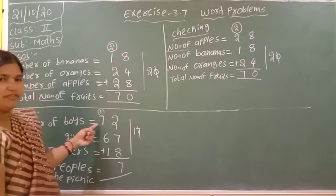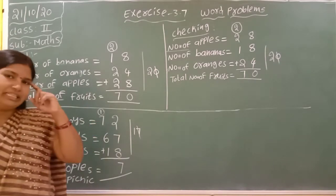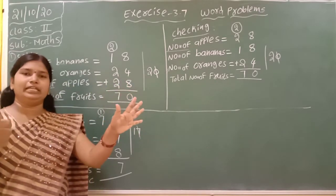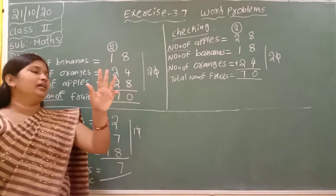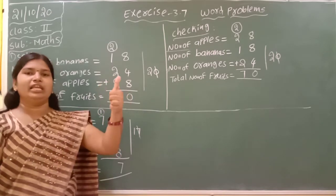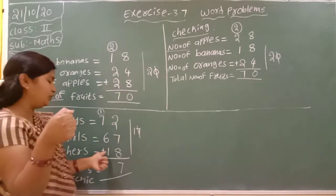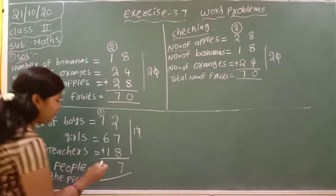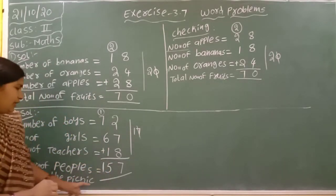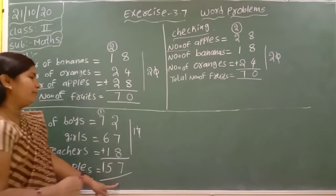One plus seven is eight. Eight plus six — eight in the mind, take six fingers — nine, ten, eleven, twelve, thirteen, fourteen. Fourteen plus one is fifteen. So total 157 members went for the picnic.